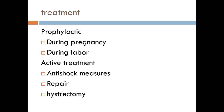Treatment of ruptured uterus — prophylactic treatment is very important. During pregnancy, proper antenatal care, encouraging grandmultiparous women to deliver at hospital, and elective caesarean section in cases such as upper segment uterine scar. Patients must be instructed to seek medical advice when uterine contractions begin. During labor, monitor the progress of labor with proper use of oxytocin; avoid forceps, ventouse, or breech extraction before full dilatation of the cervix; and explore the uterine cavity after delivery, especially with previous scars, instrumental delivery, or obstructed labor.